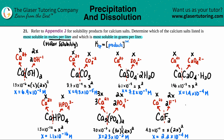For molar solubility it's always the x value. Now we just find the greatest number. We have 10⁻³ for calcium hydroxide — is anything bigger? Yes, 10⁻² for calcium phosphate. Since this is the biggest exponent, Ca₃(PO₄)₂ is the most soluble in moles per liter. Moles per liter is the same as molarity.